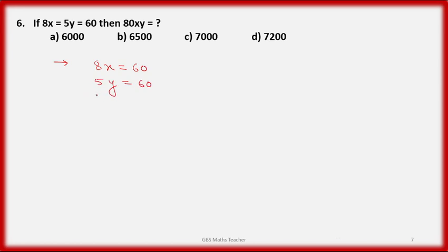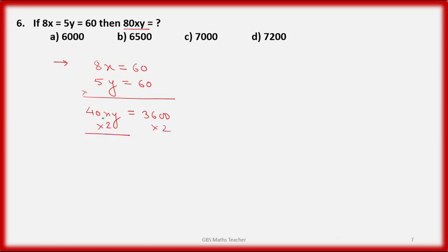Now multiply both equations together: 8x × 5y = 60 × 60, so 40xy = 3600. But we need 80xy, so multiply both sides by 2: 80xy = 7200. This is the right option.